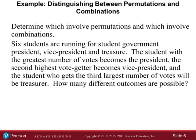Example: six students are running for student government — president, vice president, and treasurer. The student with the greatest number of votes becomes president, the second highest becomes vice president, and the student who gets the third largest number of votes will be treasurer. How many different outcomes are possible?